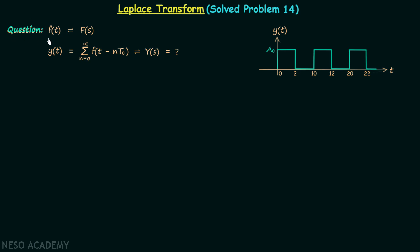In this question there is one time domain signal f(t) and f(t) has the Laplace transform equal to F(s). There is another time domain signal y(t), which is equal to the summation from n equal to 0 to infinity of f(t minus n·t₀), and y(t) has the Laplace transform equal to Y(s). In this question we are required to calculate Y(s) in terms of F(s).